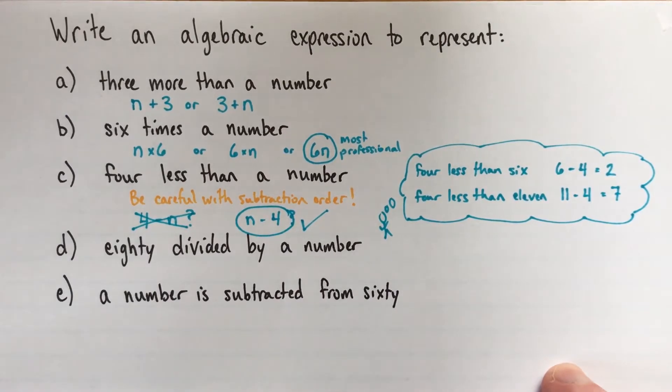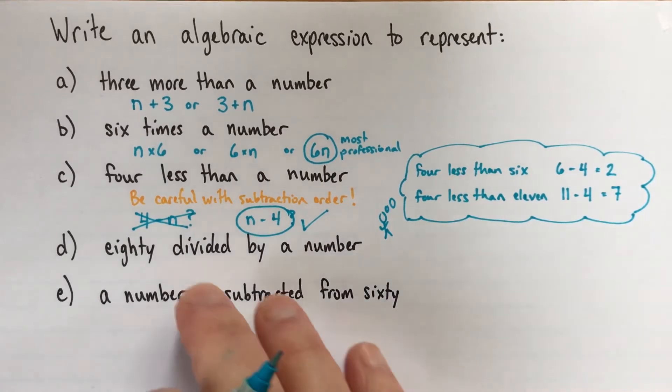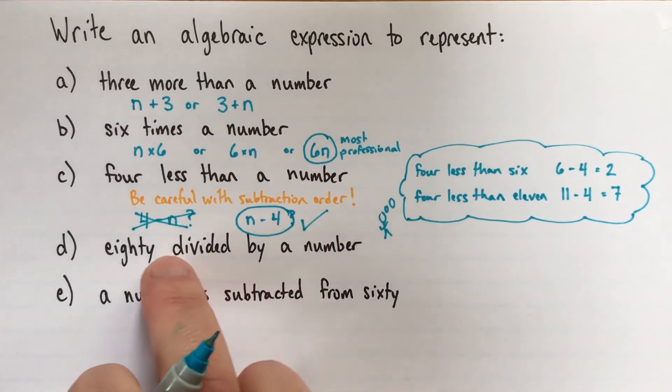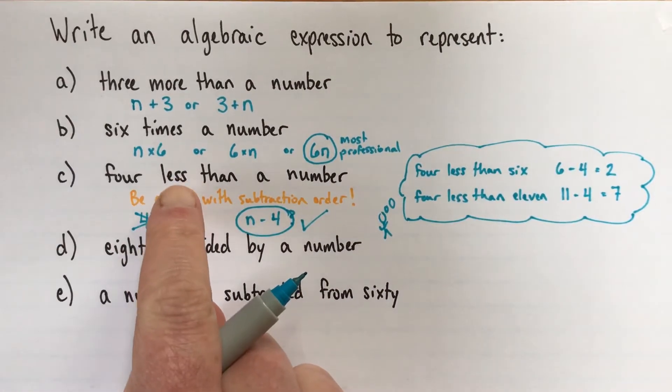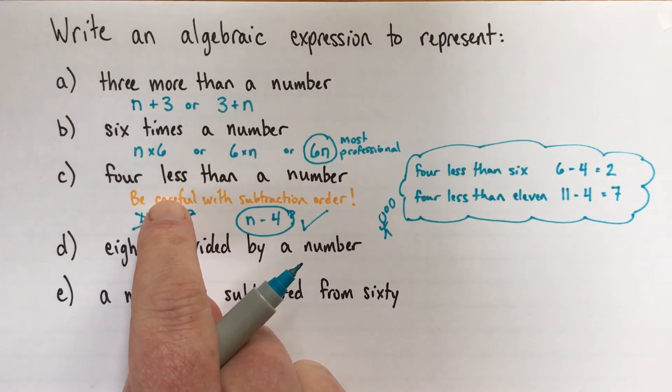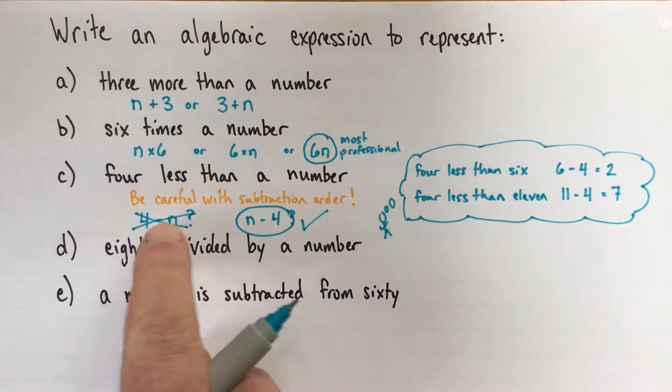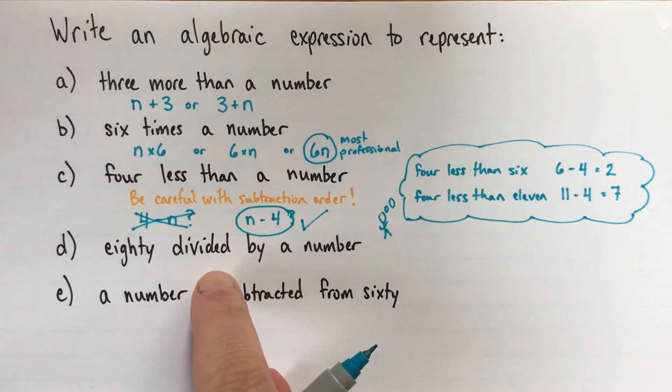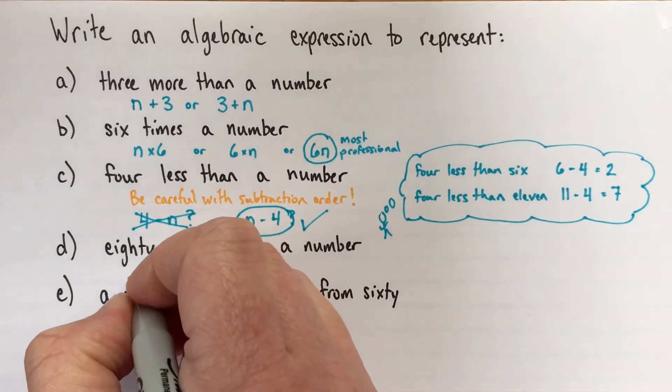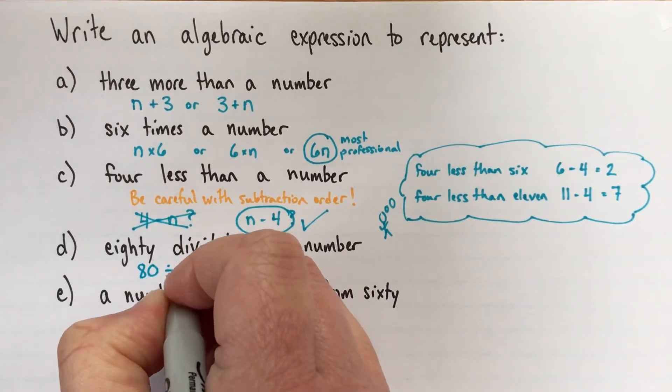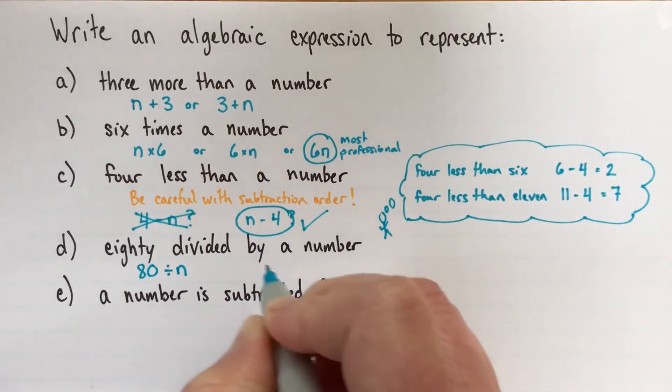Alright, moving on to part D. 80 divided by a number. And I think this one is relatively straightforward because of the way the wording. The problem with subtraction is just the words, the way that we talk about subtraction doesn't match up as well with the way that we write it down with symbols. But most of the ways we talk about the other operations match up pretty well.